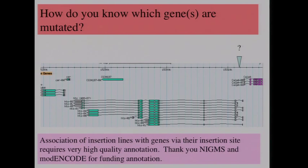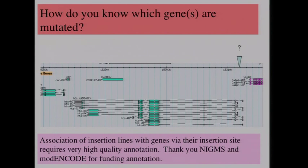A key aspect is that when you get one of these sites, there's no function visible — you're just seeing by sequencing that your element is now here. You depend totally on annotation to know whether this is likely to be a mutant of this gene, and which of the transcripts. The success of this project has been greatly dependent on the quality of the annotation, which in the fly is quite good and has improved considerably thanks to the ModEncode project.